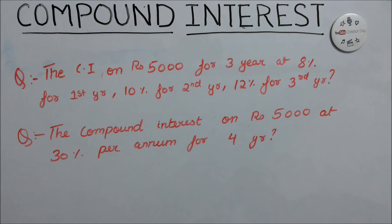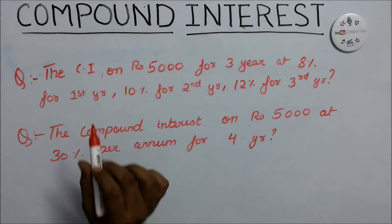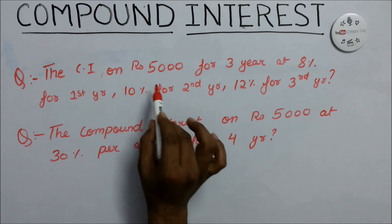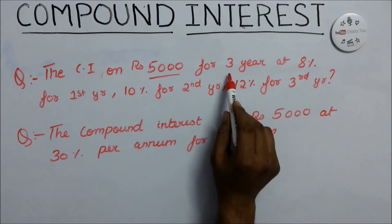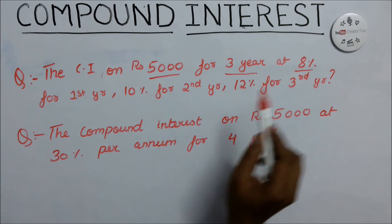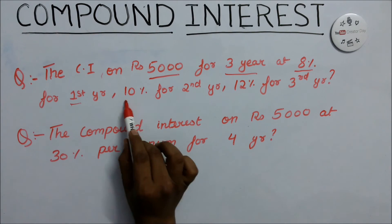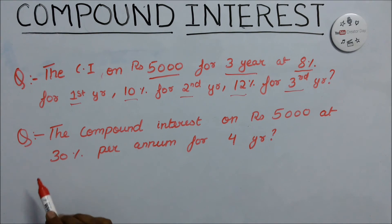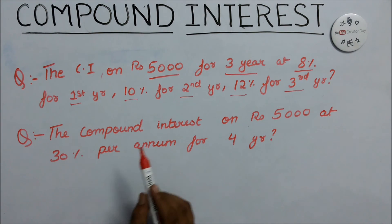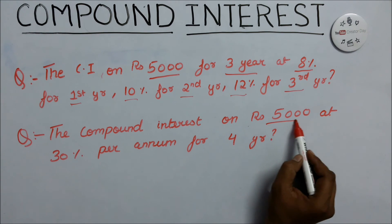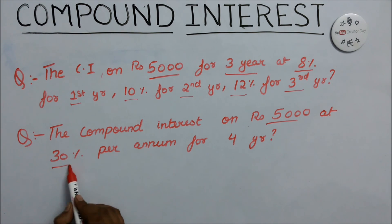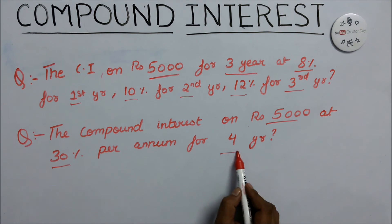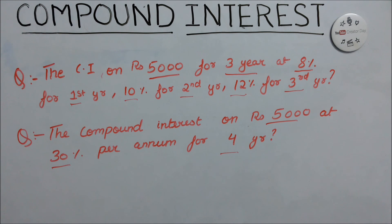Now friends, solve these practice questions based on the previous methods. Question 1: the compound interest on rupees 5000 for 3 years at 10%. Question 2: the compound interest on rupees 5000 at 30% per annum for 4 years. Thank you for watching this video, subscribe us for more videos, have a nice day.